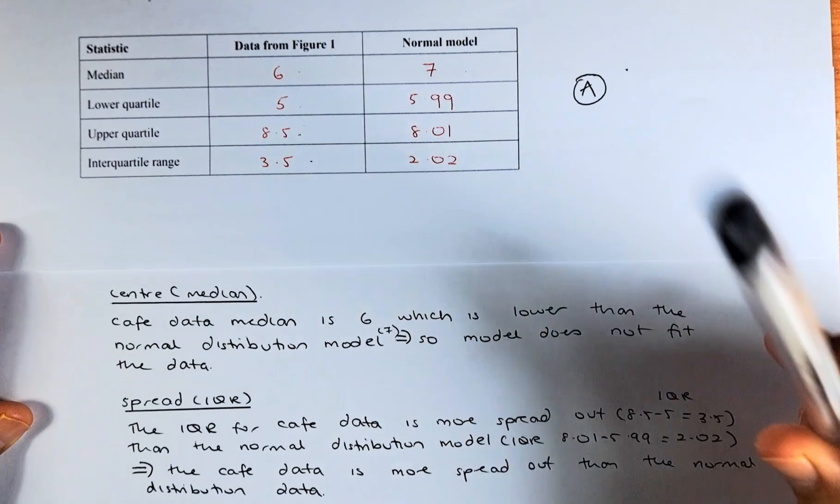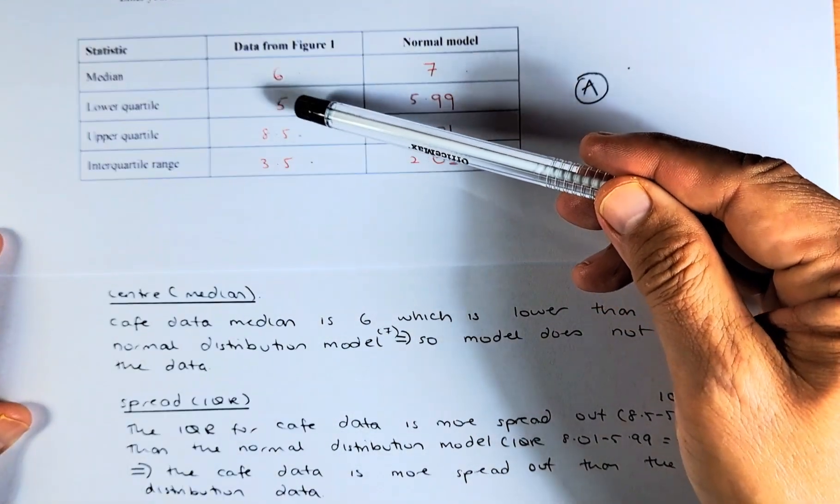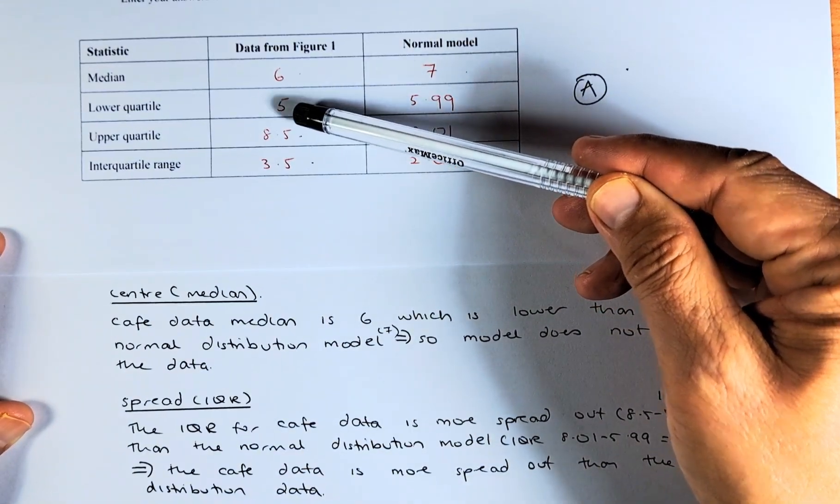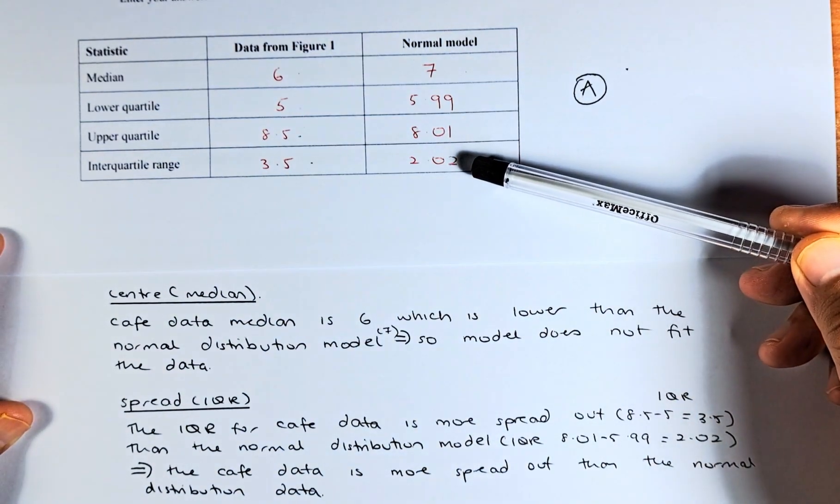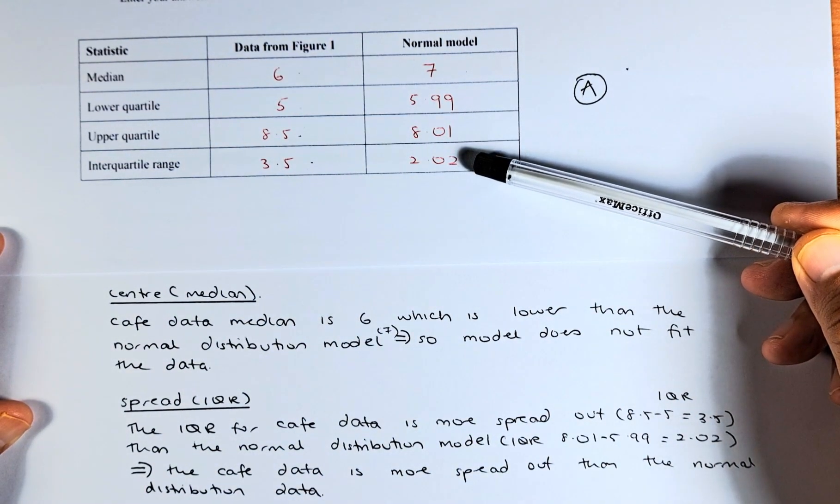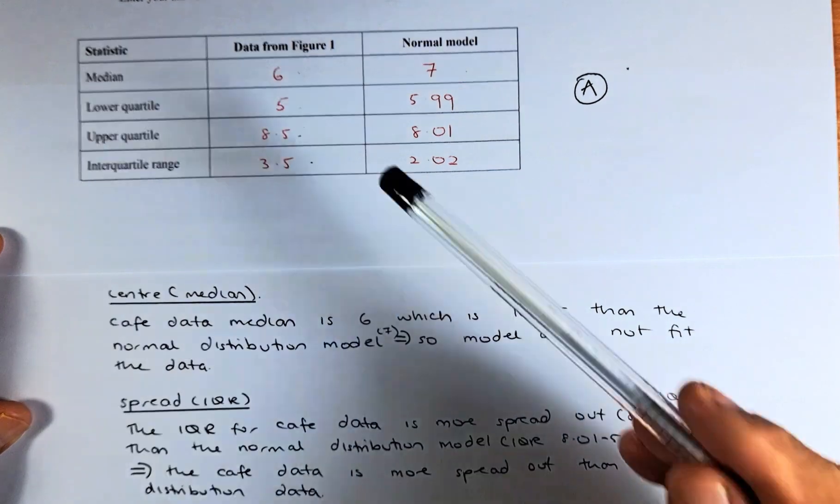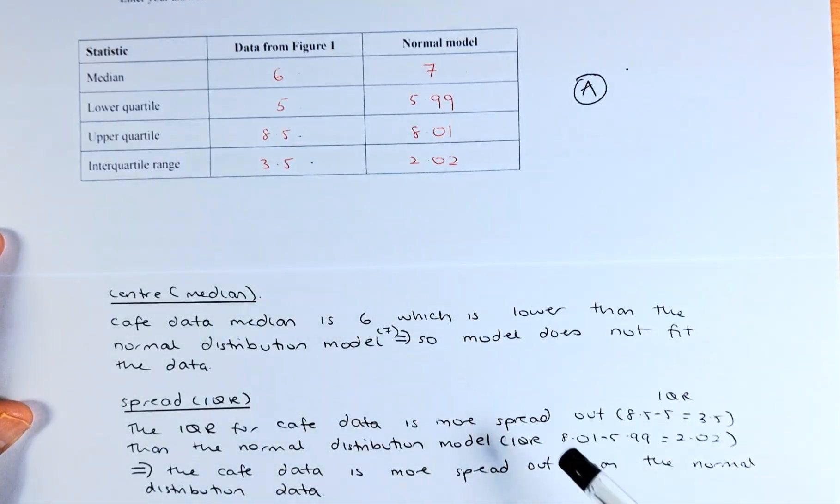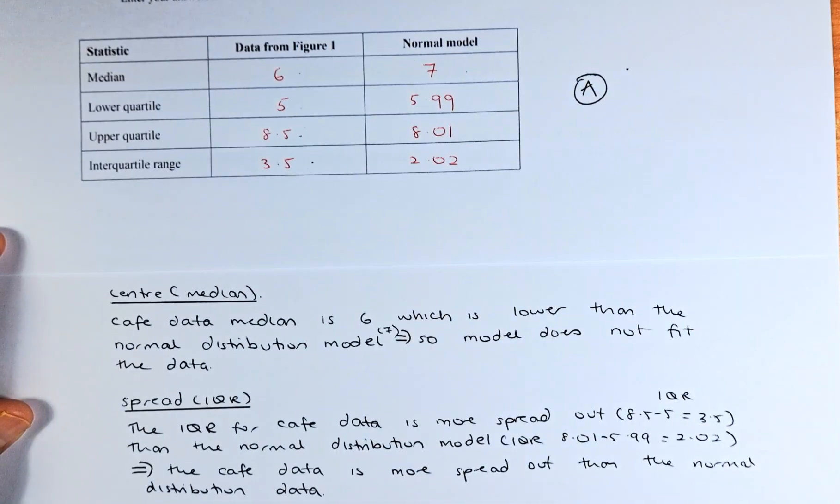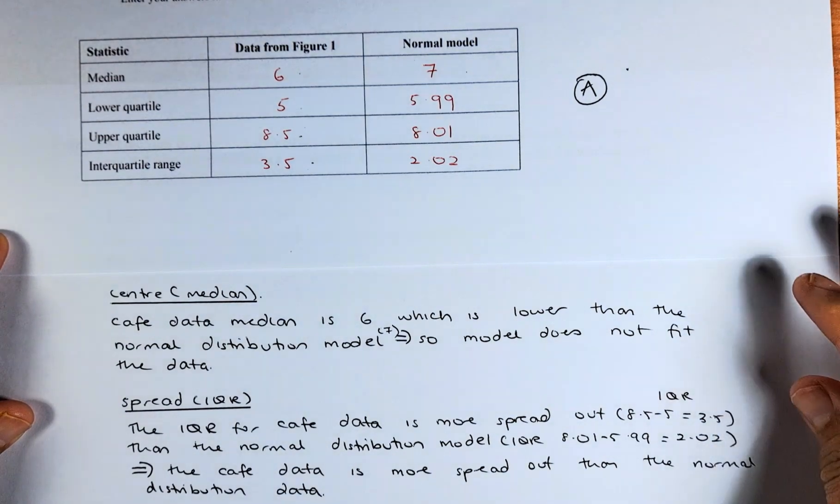And then we talk about the spread. The spread is 8.5 minus 5, or the interquartile range is 3.5. The interquartile range for the normal model is 2.02. So the cafe data is more spread out than the normal model distribution.